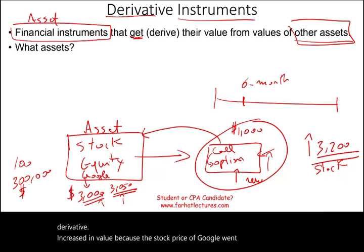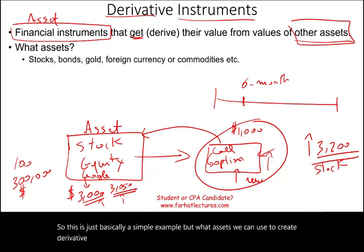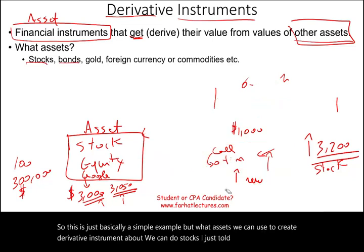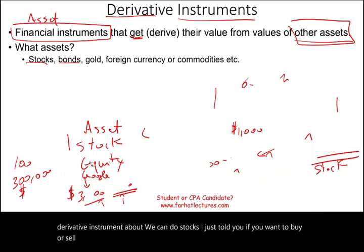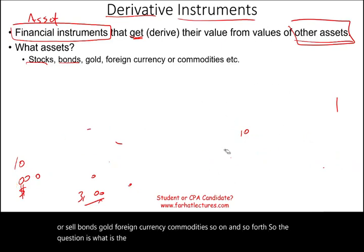This is a simple example, but what assets can we use to create derivative instruments? We can use stocks, bonds, gold, foreign currency, commodities, and so on. The question then becomes: what is the purpose of derivatives?